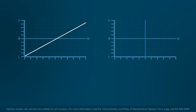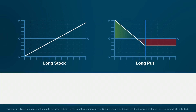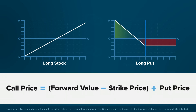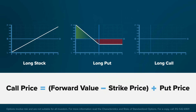When we examine the put-call parity formula, simple algebra shows us how different structures have similar payoffs. For example, the call price is equal to the forward value minus the strike price plus the put price. This shows that the value of a call is the same as being long a stock and long a put — you will notice that those payoff graphs look quite similar.